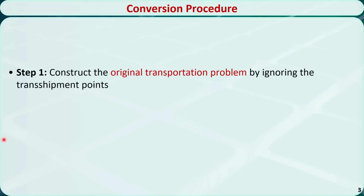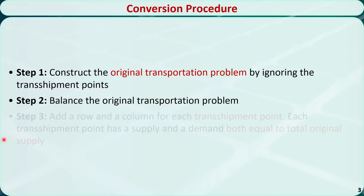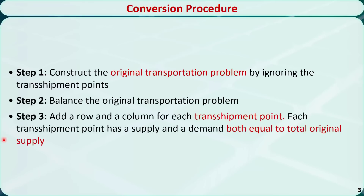To convert the transshipment problem to a transportation problem, we need to follow three steps. Step 1: construct the original transportation problem by ignoring the transshipment points. Step 2: balance the original transportation problem. Step 3: for each transshipment point, add a row and a column in the transportation tableau, and set the supply and demand both equal to the total original supply.